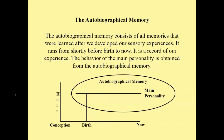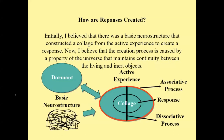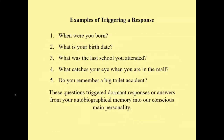The behavior of the main personality is obtained from the autobiographical memory. Initially, I believed that there was a basic neural structure that constructed a collage from the active experience to create a response. Now I believe that the creation process is caused by a property of the universe that maintains continuity between living and inner objects. Examples of triggering a response: When were you born? What is your birth date? What was the last school you attended? What catches your eye when you're in the mall? Do you remember a big toilet accident? These questions triggered dormant responses or answers from your autobiographical memory into our conscious main personality.